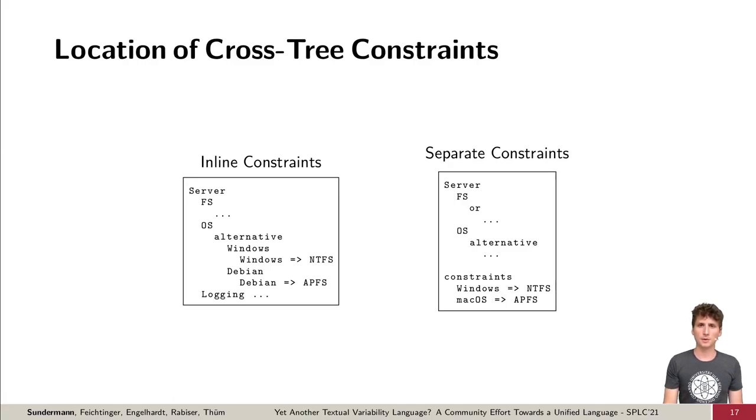Let's also take a look at some examples where participants voted on their favorite way to model a concept. When analyzing the variability languages, we found two locations to store cross-tree constraints, as seen on the left, or separated from the tree as seen on the right side. The participants could now vote which of both concepts they prefer. Here they preferred cross-tree constraints separated from the tree.